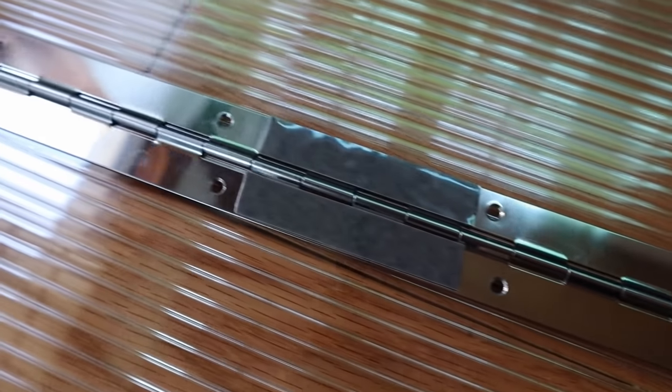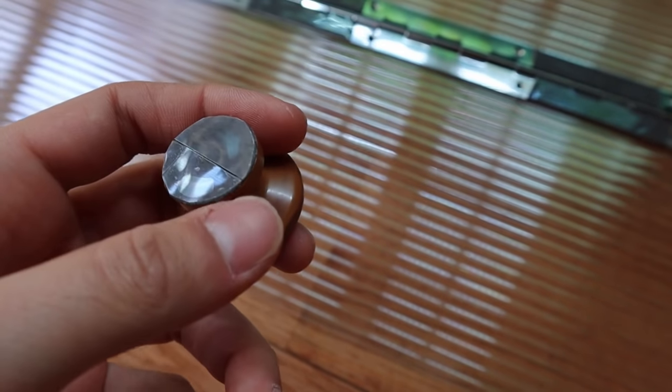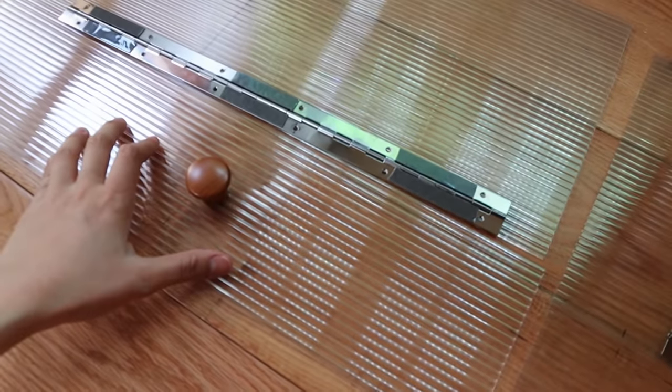So once everything is taped up, it should look kind of like this. You've got the double-sided tape on the hinges right there and on the knobs as well. Now I'm going to remove the plastic off of this and attach it onto the polycarbonate board.